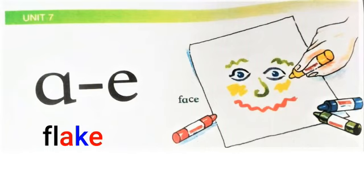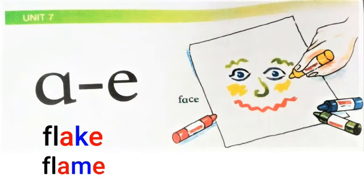Here, in the place of the new letter, I wrote K. So the pattern is complete with A-K-E. In the same way, in place of K, if I write M, it will be 'flame'. You keep in mind that you can take any new letter in between A and E to make a new word, but the letters A and E will not be changed. So students, using this pattern, we will learn some more words in this chapter. Now, we will learn the keywords of the focus box.